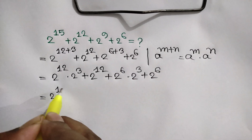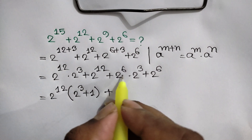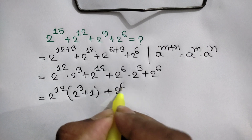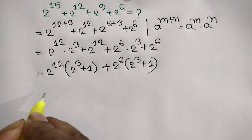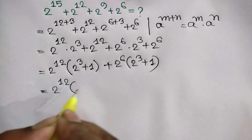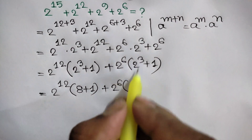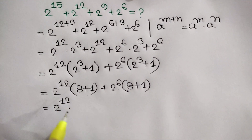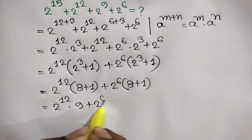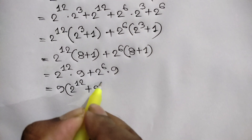Taking out 2 to the power 12 from the first two terms, we get 2 to the power 12 times (2 to the power 3 plus 1). Taking out 2 to the power 6 from the last two terms, we get 2 to the power 6 times (2 to the power 3 plus 1). Since 2 to the power 3 is 8, and 8 plus 1 is 9, we get 9 times (2 to the power 12 plus 2 to the power 6).